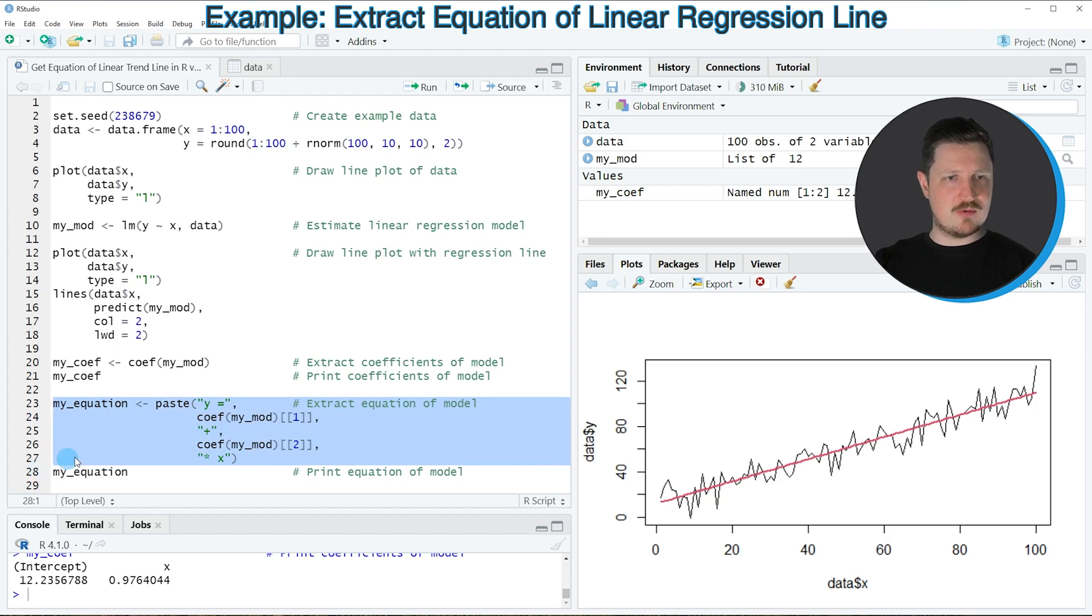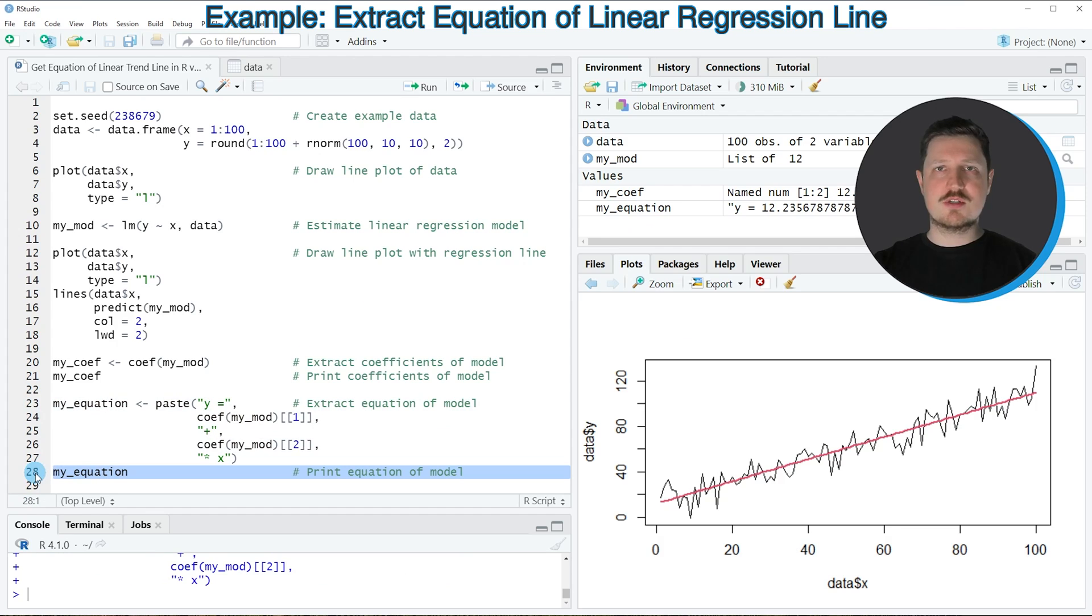If you run lines 23 to 27 of the code, you can see at the top right of RStudio that a new data object called myEquation is appearing. We can print this data object to the RStudio console by running line 28, and then you can see that we have created a character string which contains the equation of our trend line.